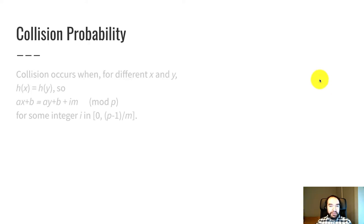Now let's see a more formal proof of this. So this part here uses some number theory. If you're not familiar with that, just kind of follow along as best you can. So a collision occurs when for different keys X and Y, the hash of X is equal to the hash of Y.